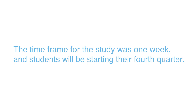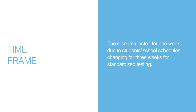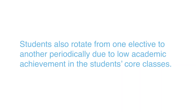The time frame of the study was one week, with students starting their fourth quarter. The research lasted for one week due to students' school schedules changing for three weeks of standardized testing. Students also rotate from one elective to another periodically due to low academic achievement in their core classes.